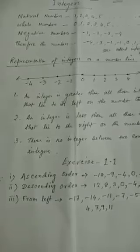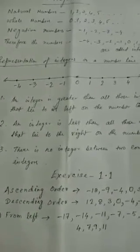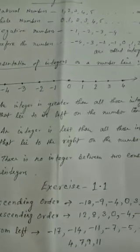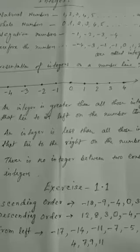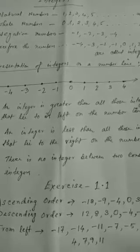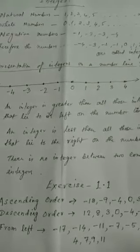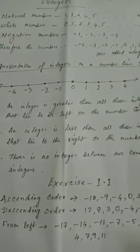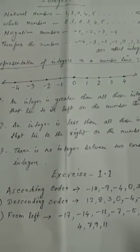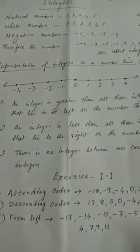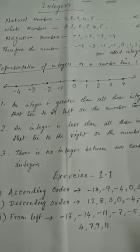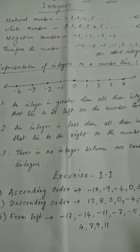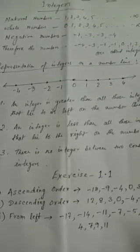Now, negative numbers — we can take any negative number, like minus 1, minus 2, minus 3, minus 4, like this. Same way, positive numbers — we can take any numbers which are positive.